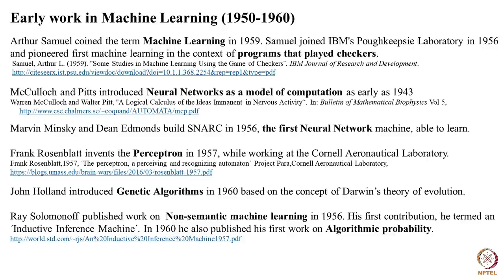Not much later there was another kind of work focused on sub-symbolic representations. John Holland introduced in 1960 his first work on genetic algorithms, inspired not by neural activity but by Darwin's theory of evolution — an even bolder step to look wider for inspiration for computational models. Also in the mid-1950s, Ray Solomonoff published his first work on machine learning with a system termed the inductive inference machine. As already mentioned, Solomonoff became one of the key persons not only to look at practical applications of machine learning but also at the theory of the field.